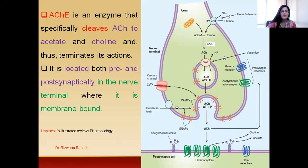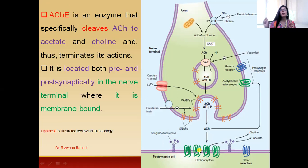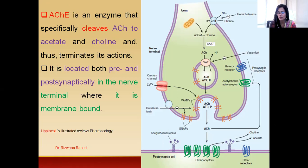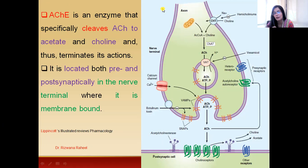According to Lippincott, these acetylcholinesterase enzymes are located both presynaptically and postsynaptically. So we have two locations: the presynaptic membrane and the postsynaptic membrane. However, most research articles indicate that acetylcholinesterases are actually present postsynaptically, as also represented in the Katzung Pharmacology figure. So we may say that mostly these enzymes are present postsynaptically.